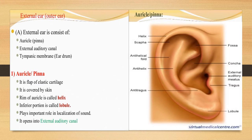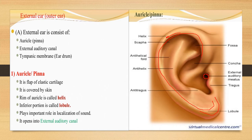The external ear consists of the auricle, also called the ear pinna — a cartilaginous flap made up of elastic fibers covered by skin. The rim of the auricle is called the helix and the inferior portion is called the lobule. They play a key role in receiving sound vibrations, which are then directed into the external auditory canal.